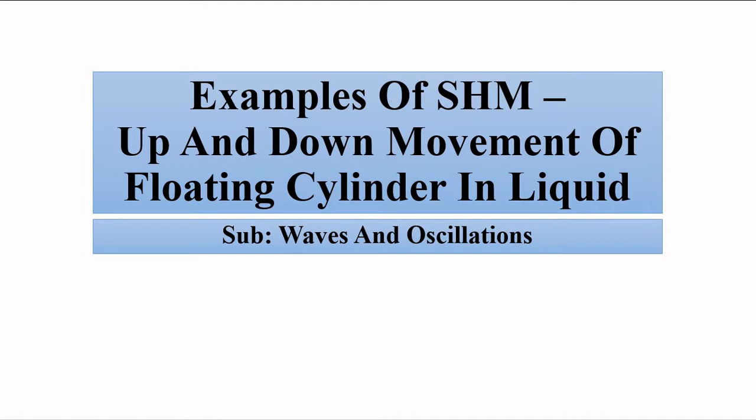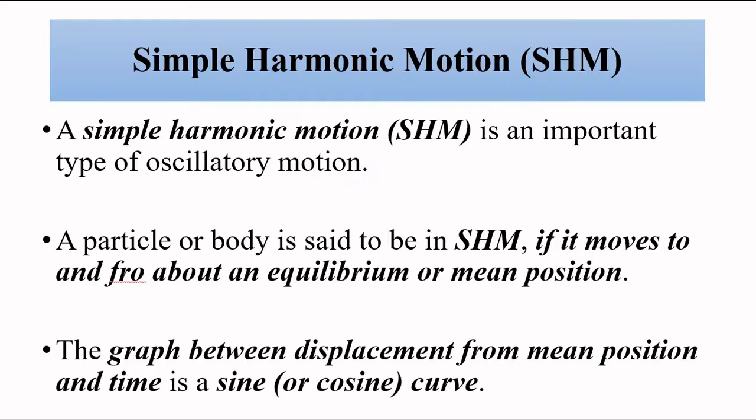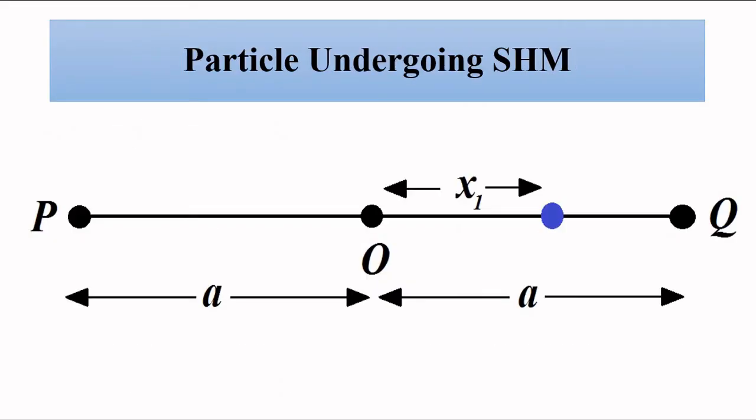Hello friends, welcome to Engineering Tutorial. We will continue our discussion related to waves and oscillations. So far we have been discussing examples of simple harmonic motion — we started with the spring-mass arrangement, then the simple pendulum, then the previous video discussed the rise and fall of liquid in a U-tube. In this video we are going to discuss another example: the up and down movement of a wooden cylinder floating on a liquid. Simple harmonic motion is the oscillatory to-and-fro movement of an object between two extreme points about a mean or equilibrium position.